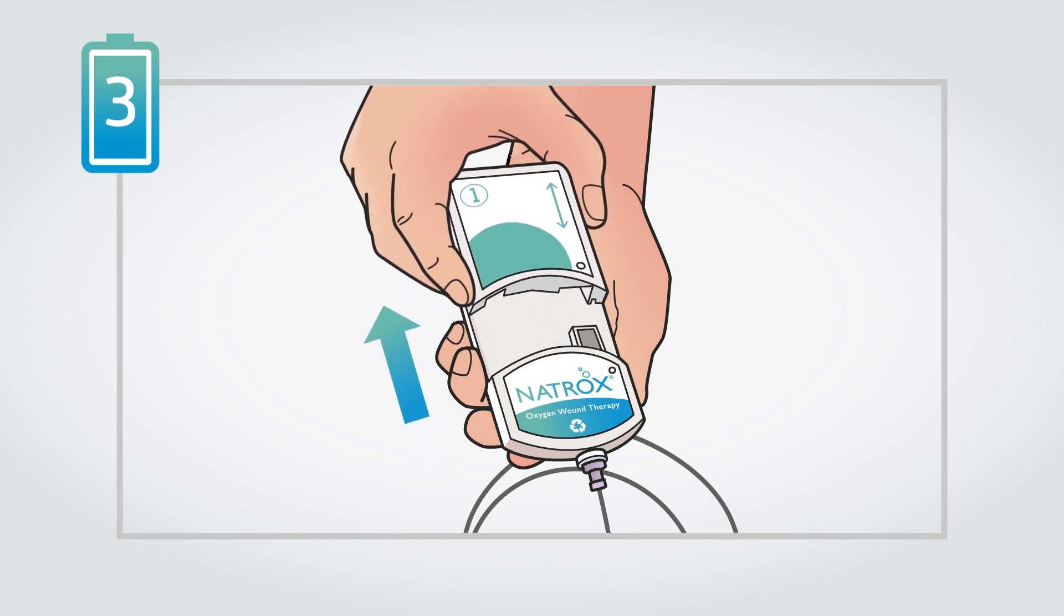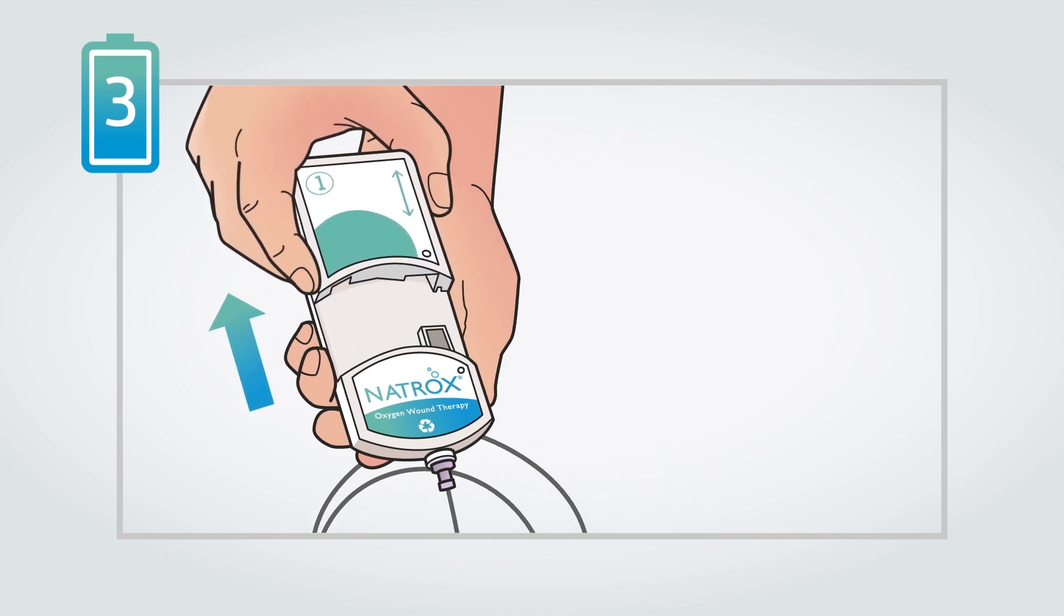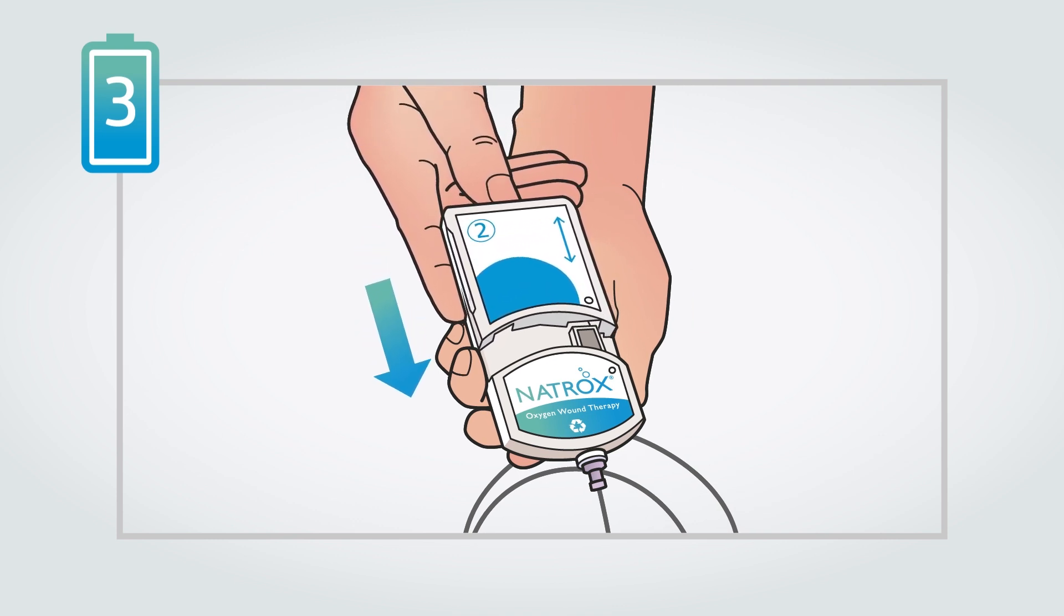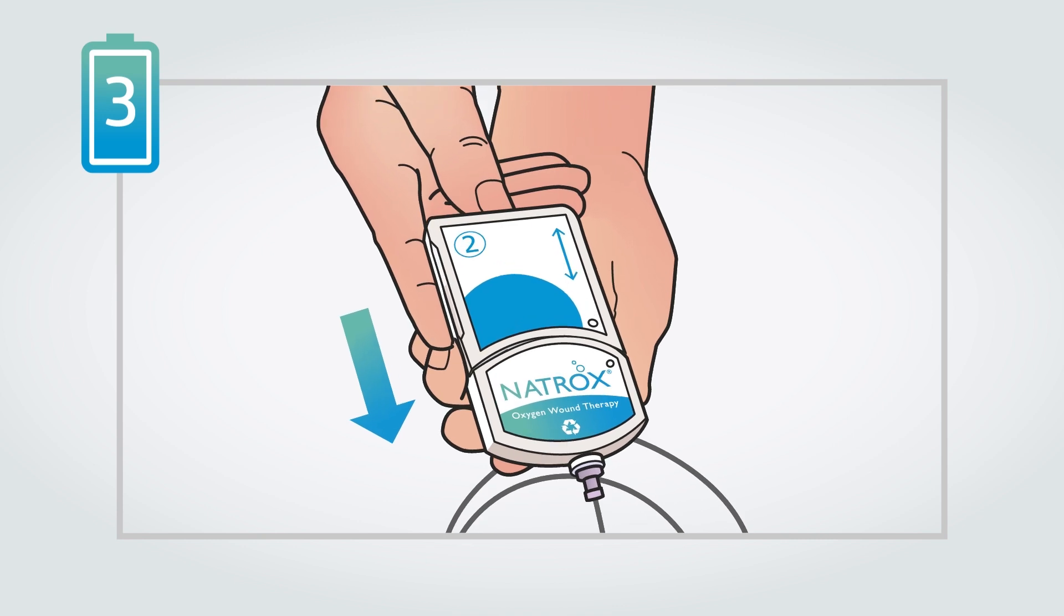simply slide the used battery out of the Natrox oxygen generator. Then slide the newly charged battery into the device. Make sure you feel it click into place.